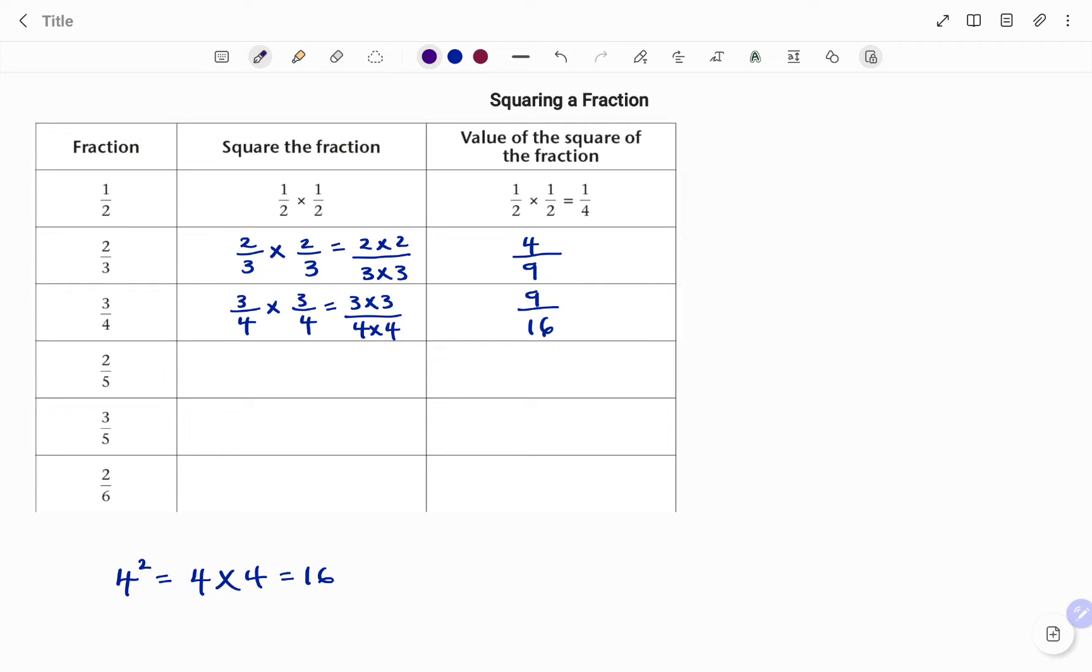The next one, 2 over 5. To square 2 over 5, that's 2 over 5 multiplying each other twice. For our numerator, we have 2 times 2, and for the denominator, 5 times 5. 2 times 2 is 4, and 5 times 5 is 25.